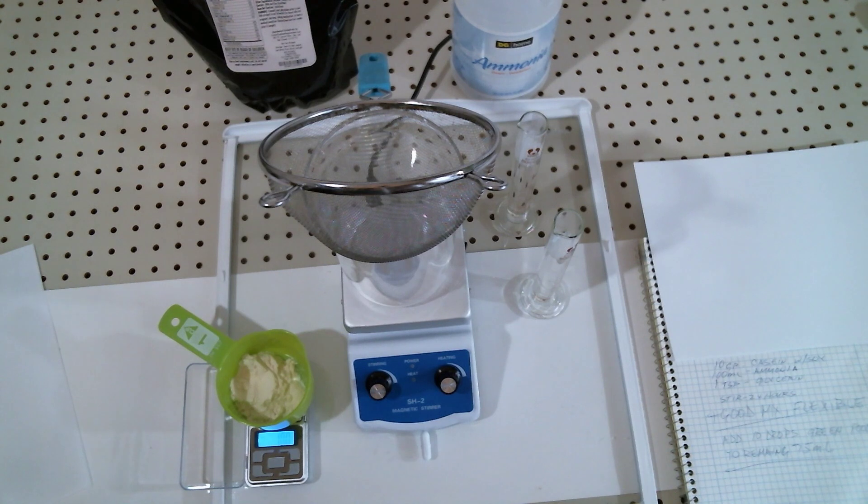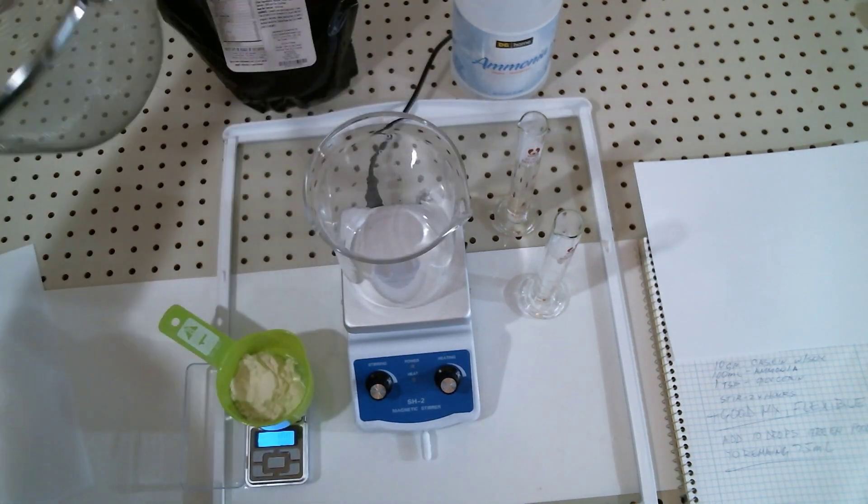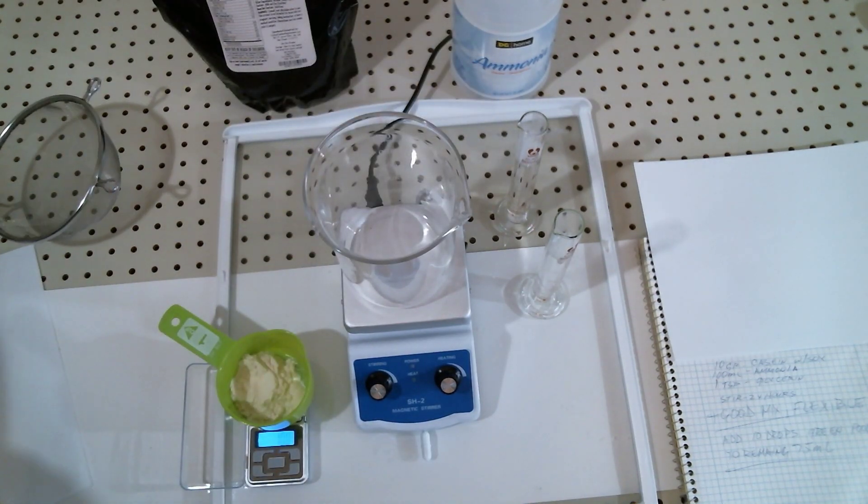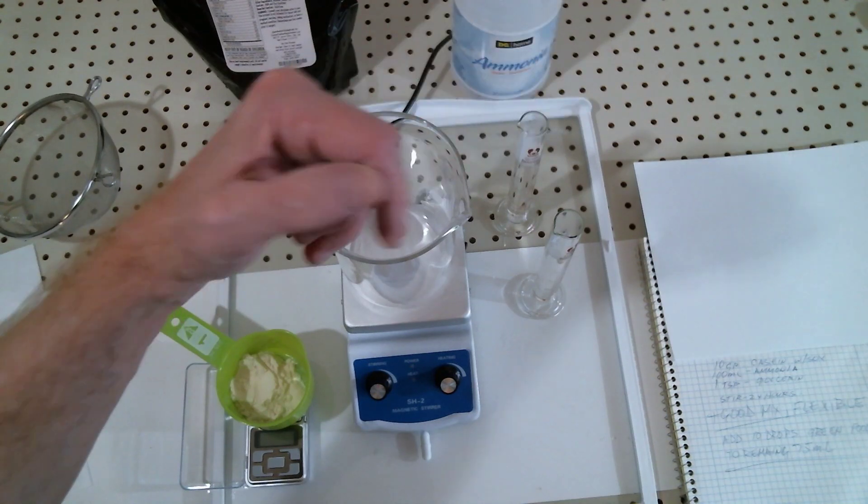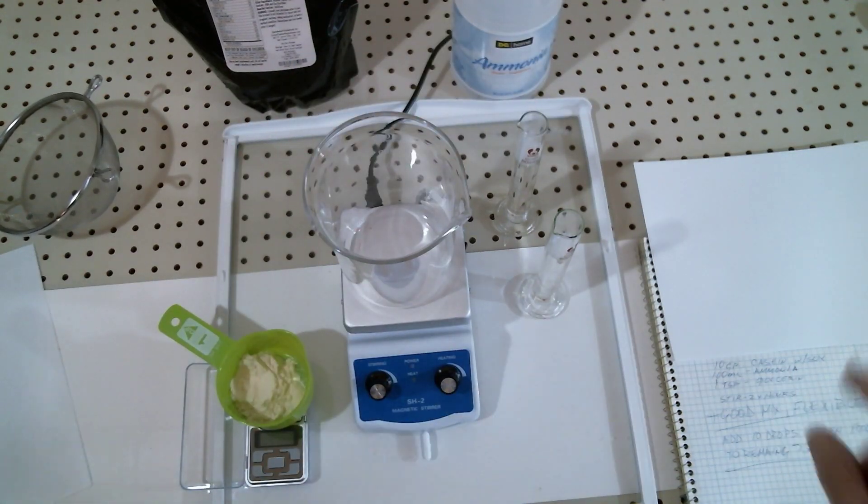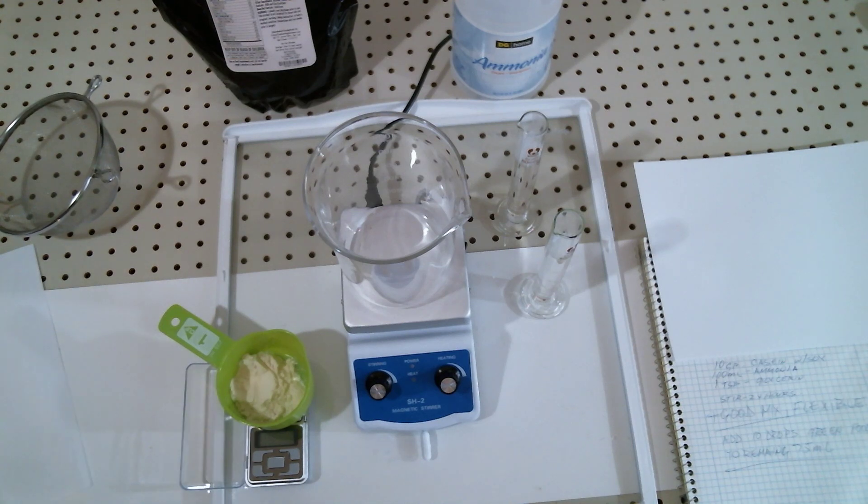We're going to mix up a base solution from which you can work off of to make many different types of casein jewelry with different colors. I've already measured out everything. We're going to start with 100 milliliters of ammonia and 10 grams of casein.